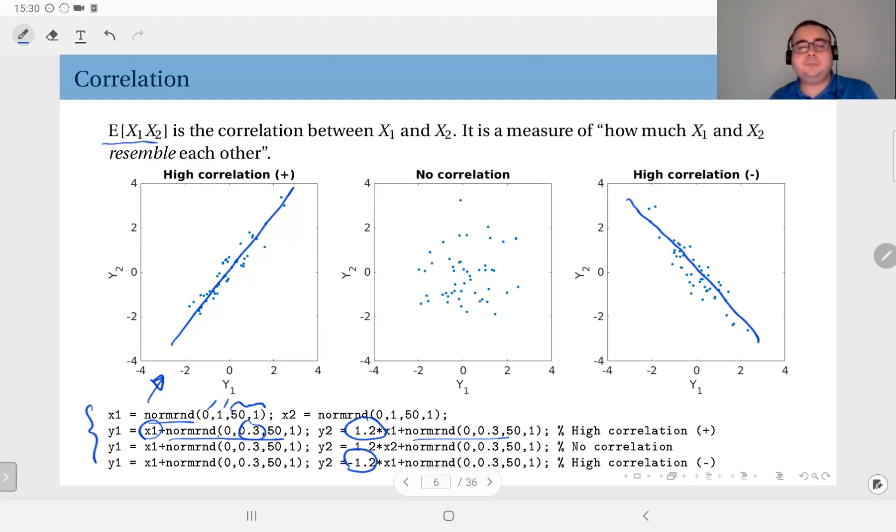That means these two distributions, they are close to each other, they resemble each other very much. And correlation is sort of a measure of this resemblance. And what do we have in the middle? Here you see Y1 is defined through X1, but Y2 is defined through X2. If you remember, X1 and X2 were independent. So what we have here is something like this. We see no correlation here.